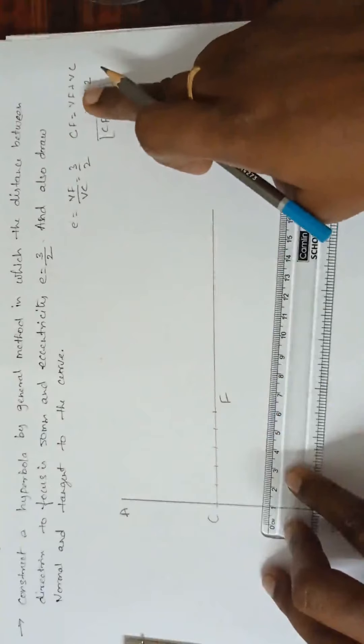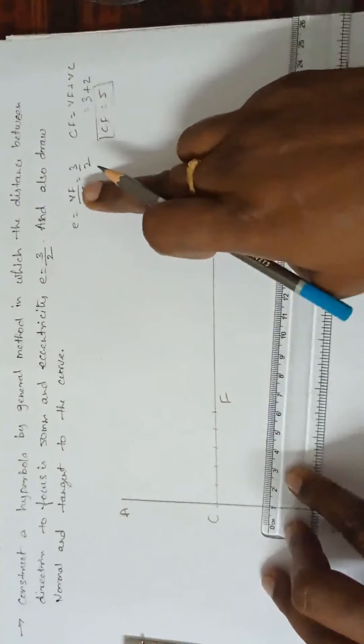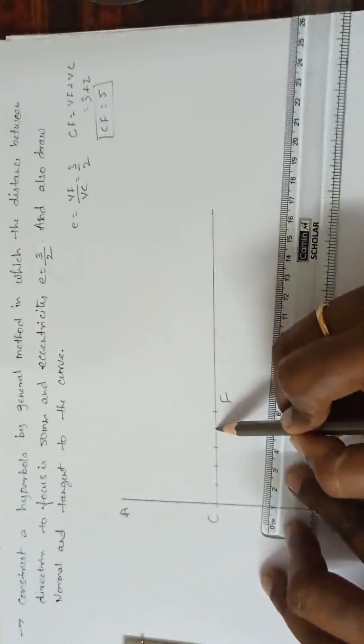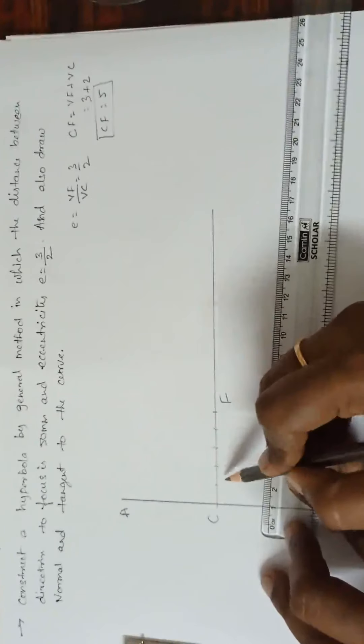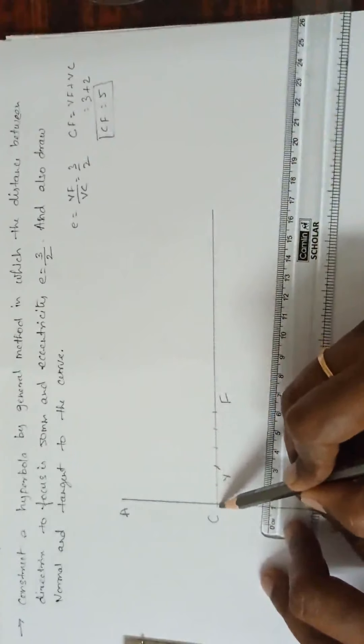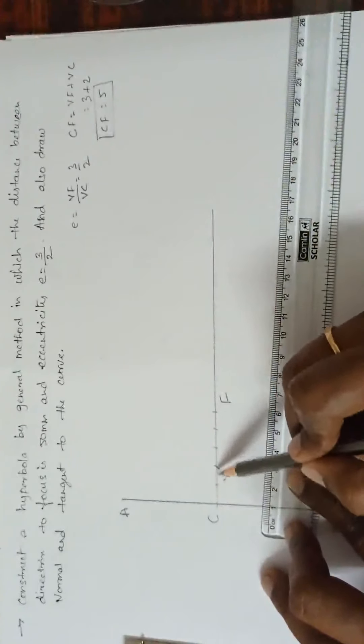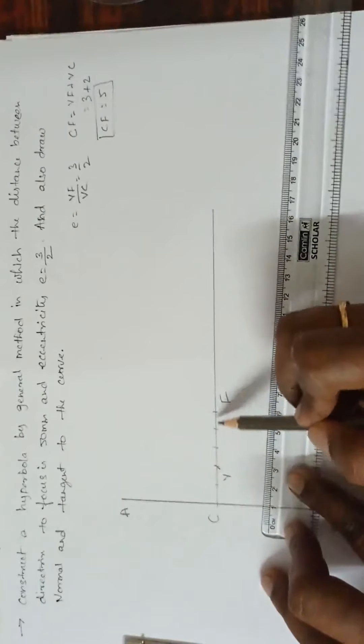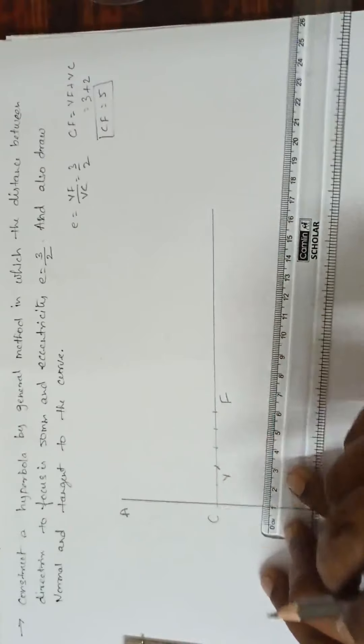Now, VF how much given? See here, 3. VF is equal to 3. Means from F, I have to mark 3. This is 1, 2 and 3. Yes. What about VC? That is 2. This is 1, 2. From C, there are up to V 2 equal parts and from F up to V is 3 equal parts. Total 5 equal parts. So, V is nearer to directrix.